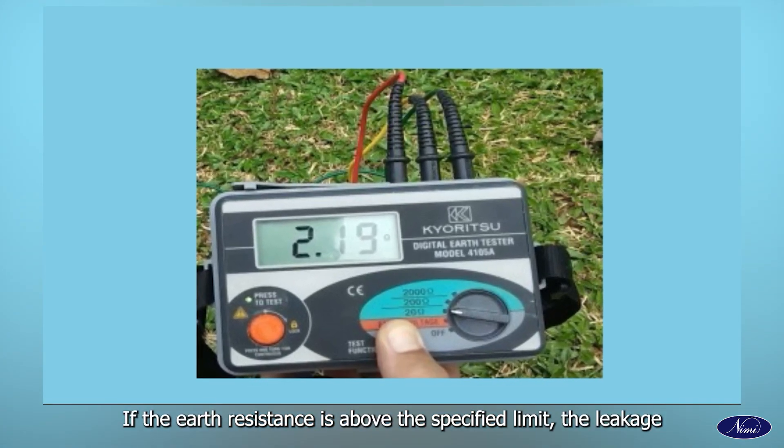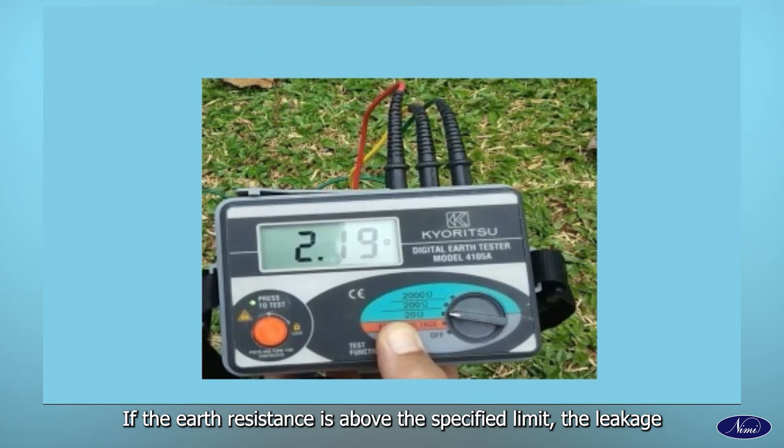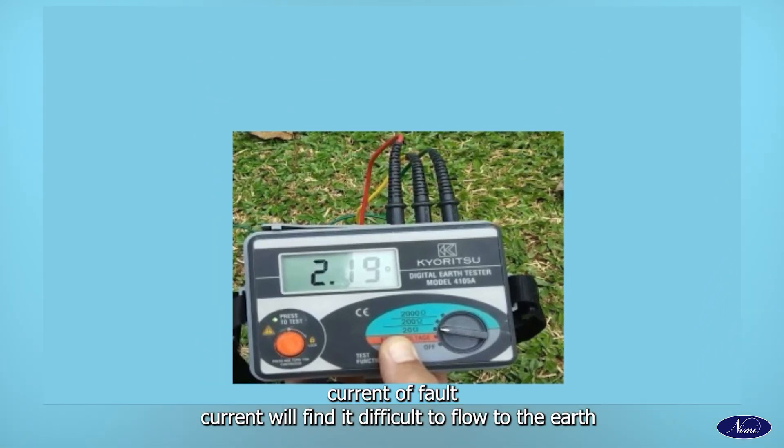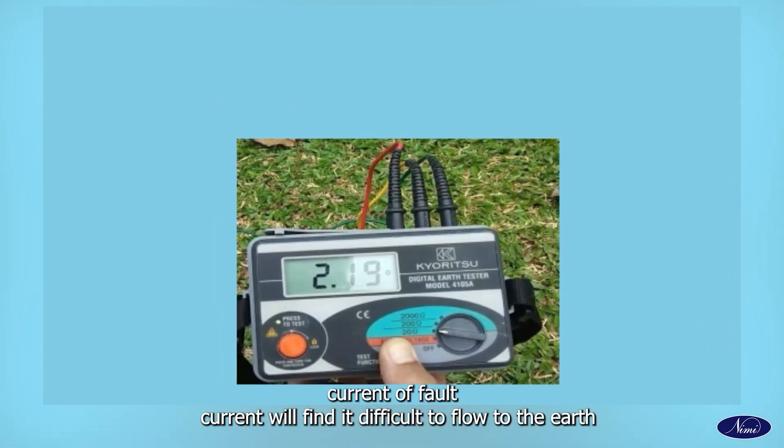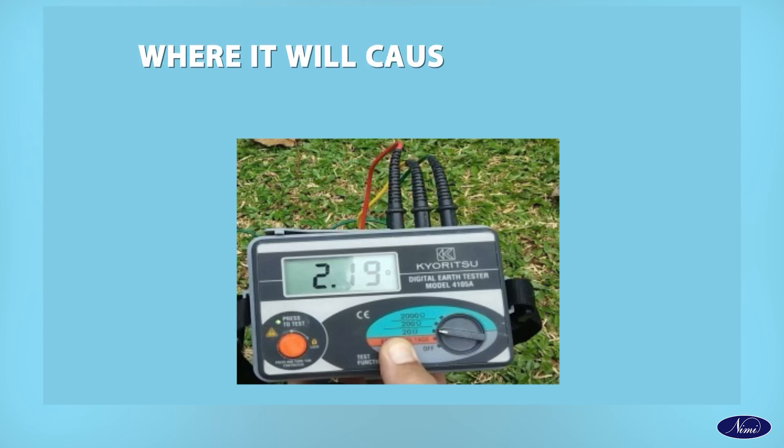If the Earth Resistance is above the specified limit, the leakage current or fault current will find it difficult to flow to the Earth, where it will cause electrical hazards to humans and equipment.